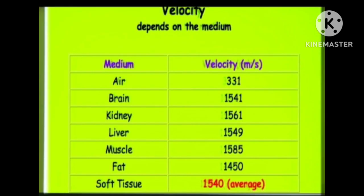Velocity depends on the medium through which sound is travelling. If the medium is air, the velocity is slowest at 331 meters per second. For soft tissue, the velocity is 1540 meters per second. For brain, it is 1541; for kidney, 1561; for liver, 1549; and for muscle, 1585 meters per second.